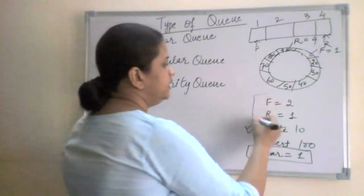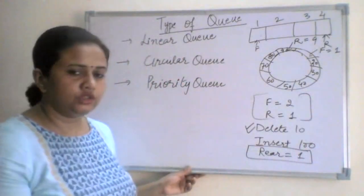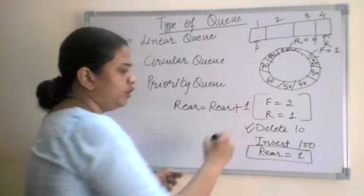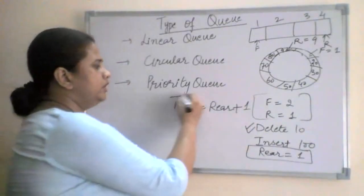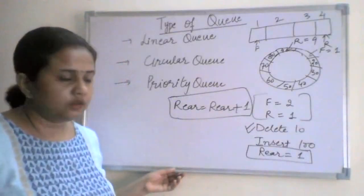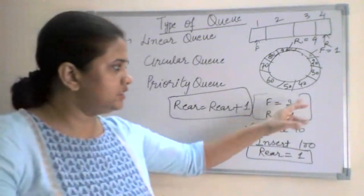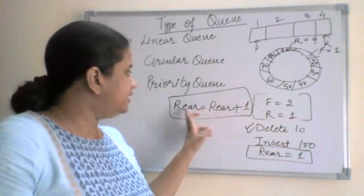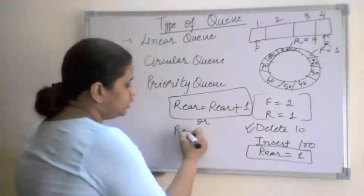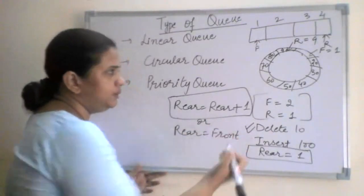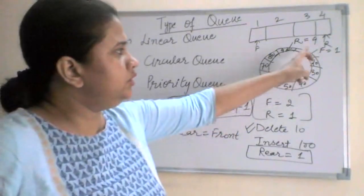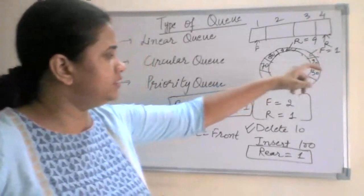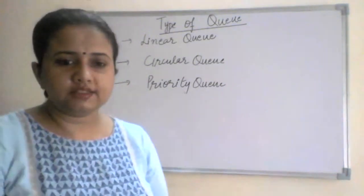Whenever we insert data in a circular queue, the operation performed is: rear = rear + 1. For example, if front equals 1 and rear equals 9, after insertion rear becomes the next position. If rear equals front, that represents the same condition. The front pointer moves forward as elements are deleted, cycling through the circular structure.